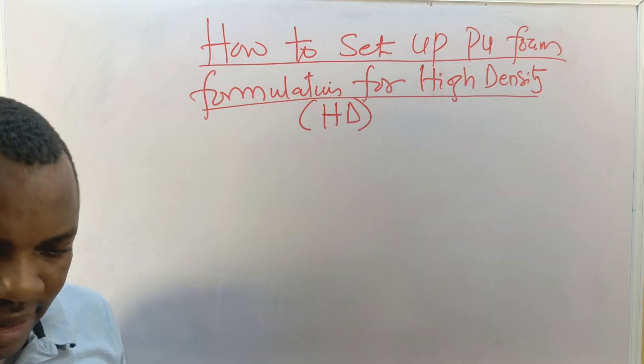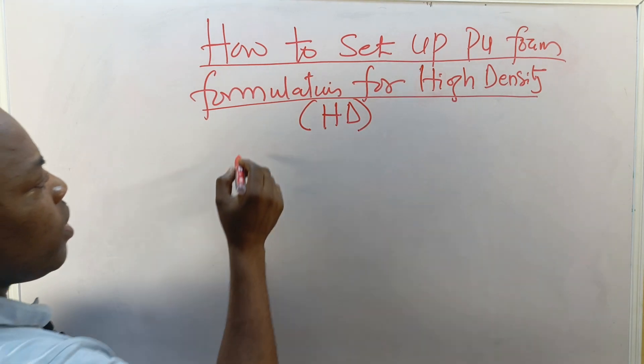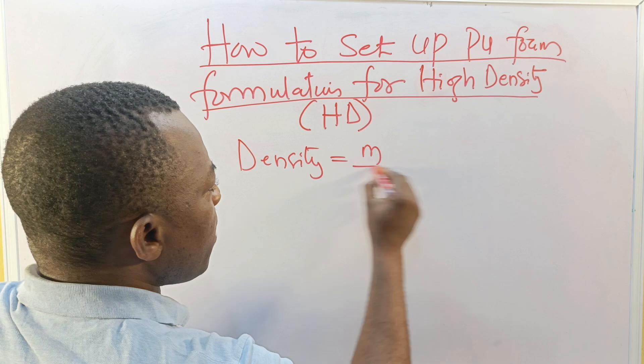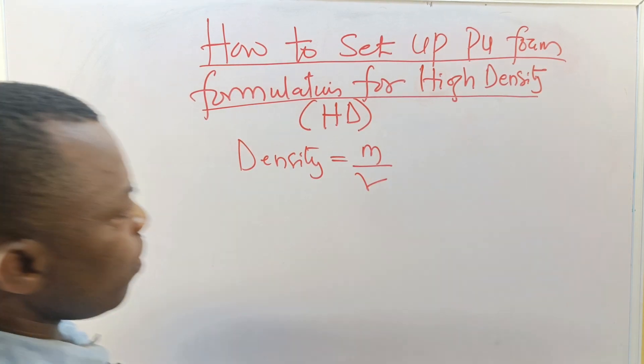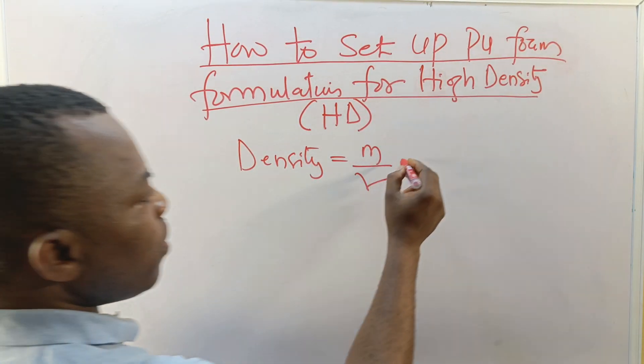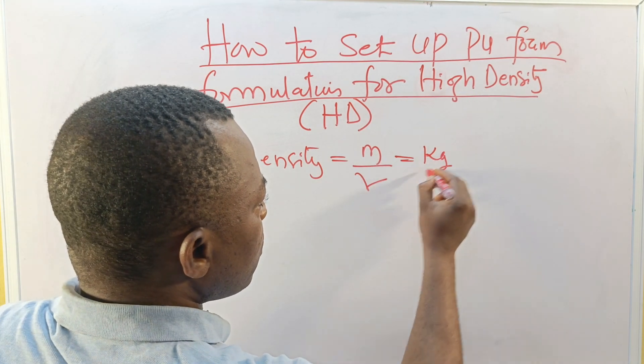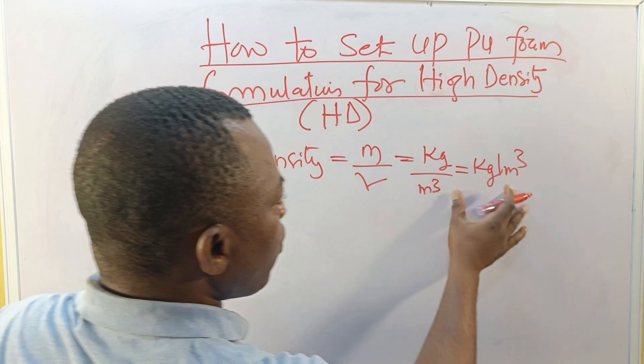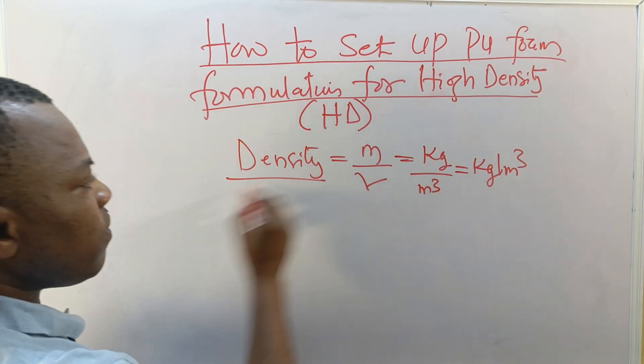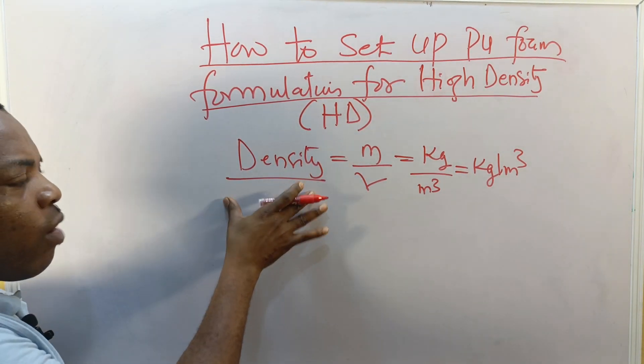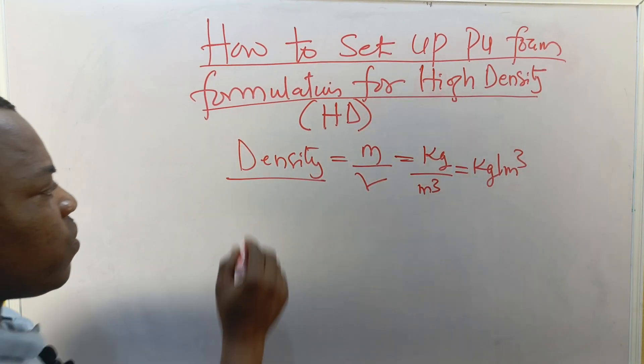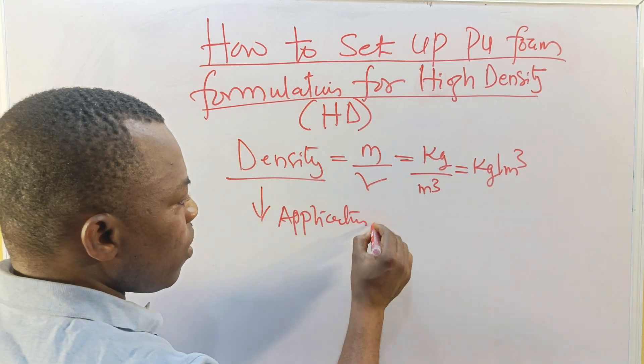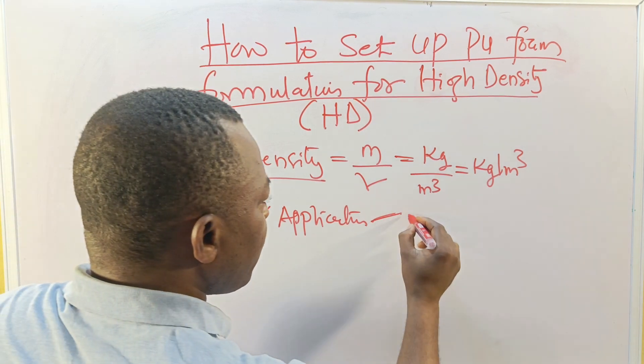There are different types of foam density. Density of foam equals mass over volume, this is in kg over meter cube, so this gives us kg per meter cube.